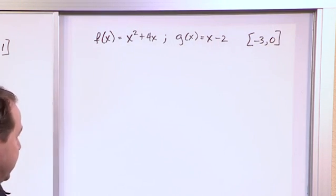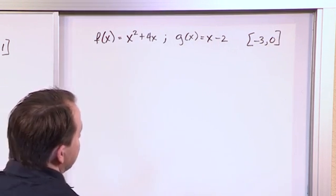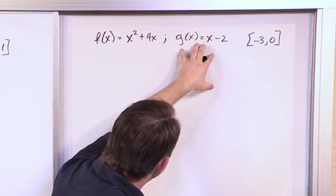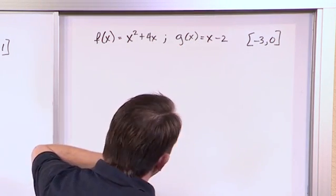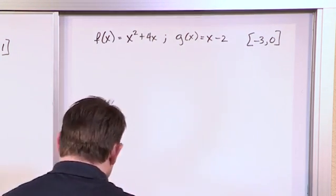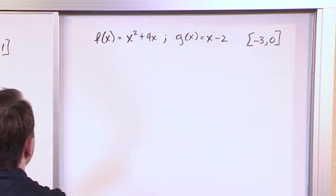So again, I haven't graphed these. I don't know which one is on top and which one is on bottom, so I'm just going to make the assumption that this guy's on top, this guy's on bottom. And if I get a negative answer, I know that I have that backwards. So let's go ahead and write our integral down and see where we get.